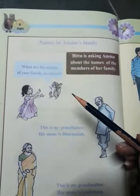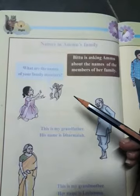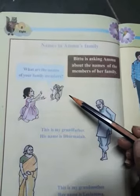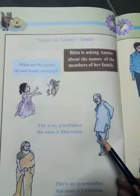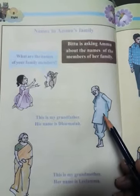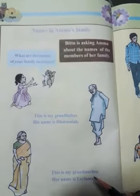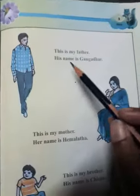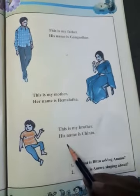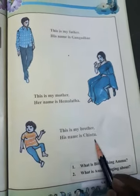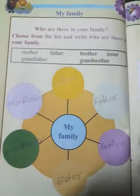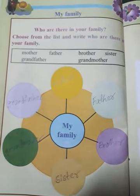Ammu has a friend — a squirrel whose name is Bittu. Ammu's grandfather's name is Dharmaya, grandmother's name is Leelamma, father's name is Gangadhar, and mother's name is Hemalata. Ammu also has a little brother named Chintu. In your previous classes you learned about their names.